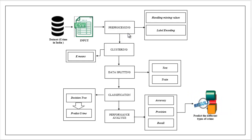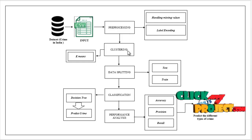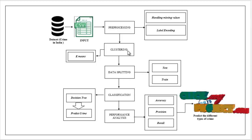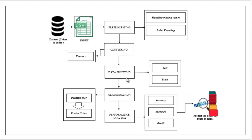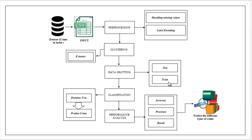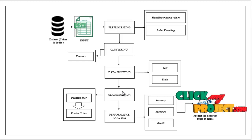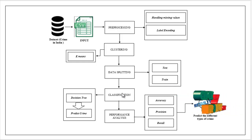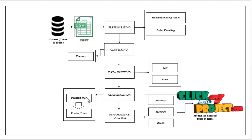After preprocessing, the data is carried to the clustering module, where we cluster or group the different types of crimes using K-means. Then we implement the data splitting module, splitting the whole dataset into test and train sets. Test data is used for prediction and train data is used for evaluation. After that, the split data is carried to the classification module, where we implement the decision tree algorithm.